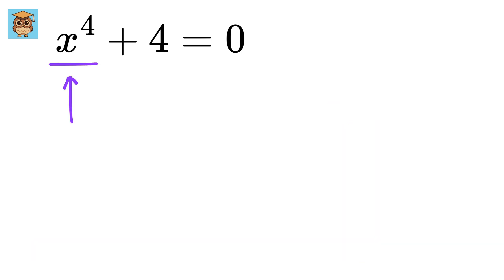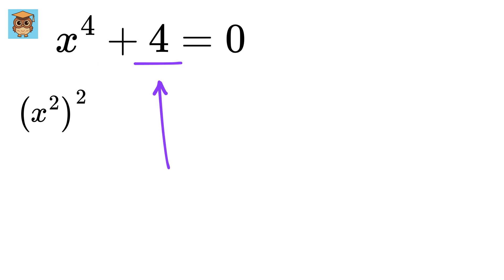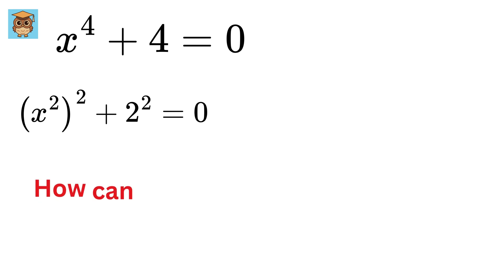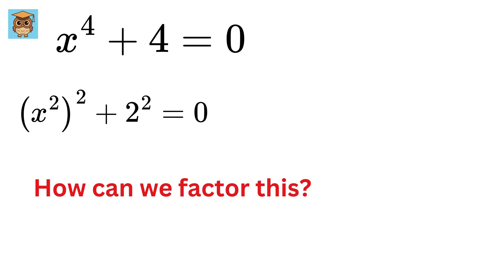We can write x⁴ as x² whole squared, and then 4 as 2 squared. Now, how can we factor the sum of 2 squares?